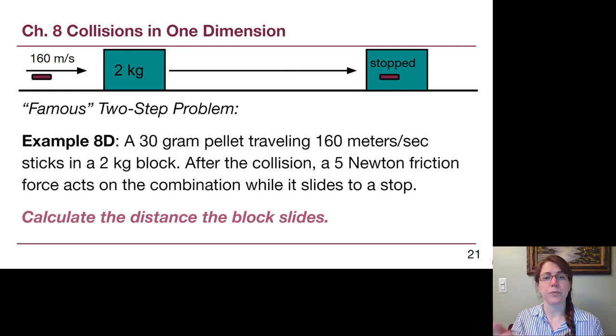In this first example here, a pellet hits a block and then the whole thing slides. The first thing that we're told about is a collision. We will need to use momentum conservation to know what the final velocity is immediately after the collision so that we know for the second half of the problem how much initial kinetic energy it has before it slides to a stop. Then we follow the energy around in a standard Chapter 7 problem.